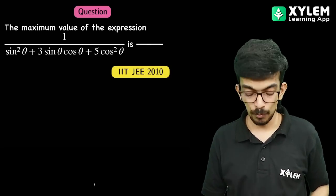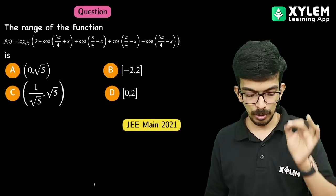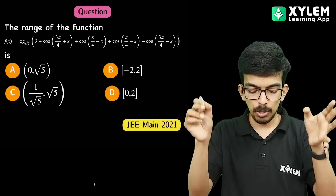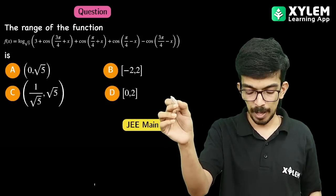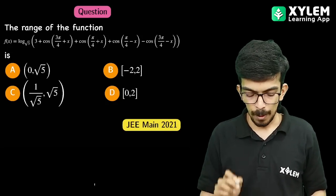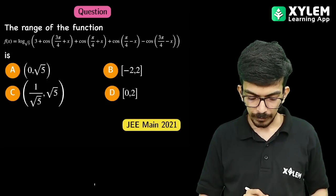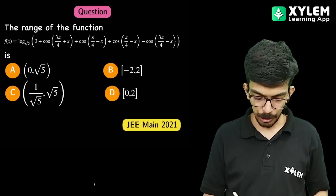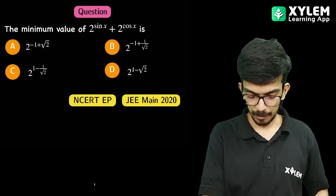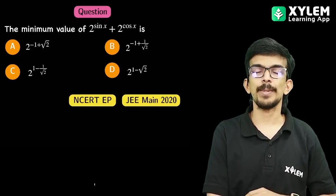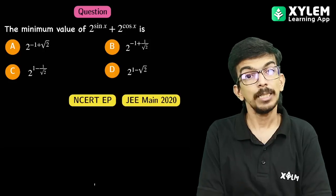The homework questions are: first, find the range of f(x) equals log base root 5 of the bracket 3 plus cos(3π/4 plus x) plus cos(π/4 minus x) minus cos(3π/4 minus x). Second, find the minimum value of 2 to the power sin x plus cos x. We will discuss these questions in the next class and continue then.